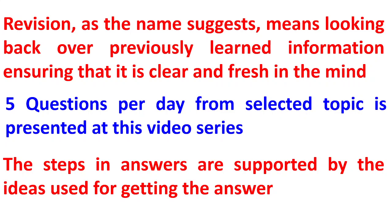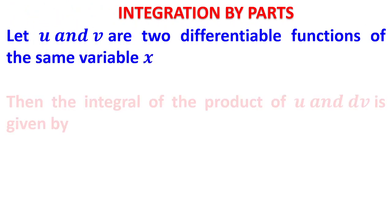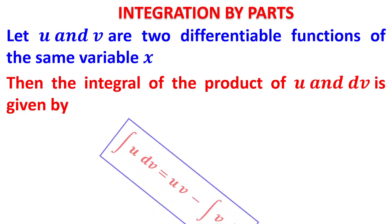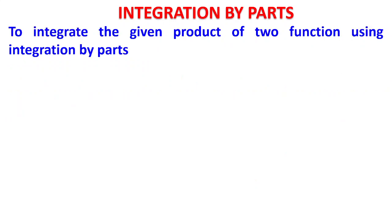In integration by parts, we take two functions u and v, both differentiable. We visualize the integral as u·dv — the first function times the derivative of the second function. The formula is: integral of u·dv = uv minus integral of v·du. We need to find u and dv, then obtain du and v.